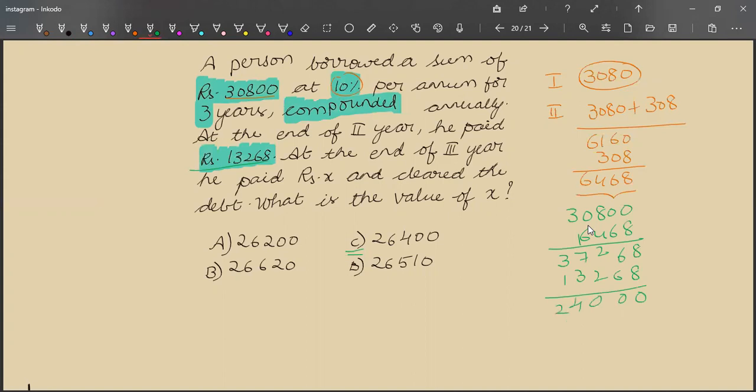So 24,000 is remaining at the end of second year. But in the third year, he needs to pay interest along with this 24,000.